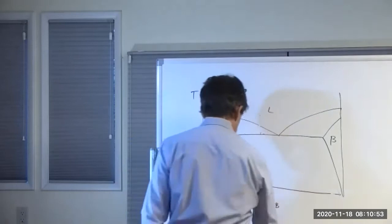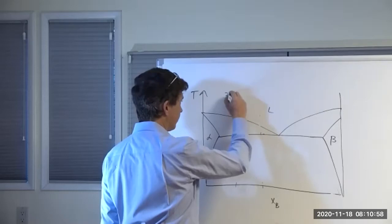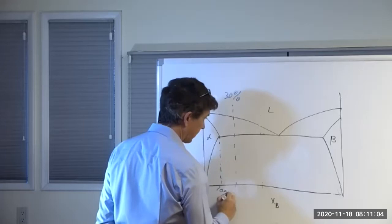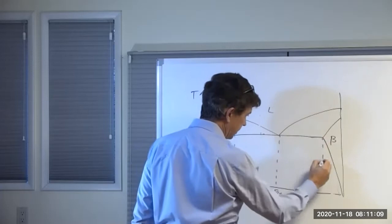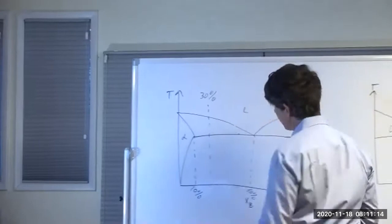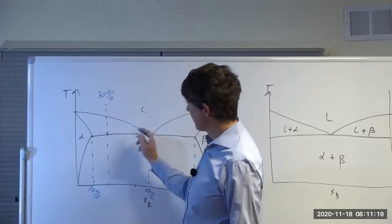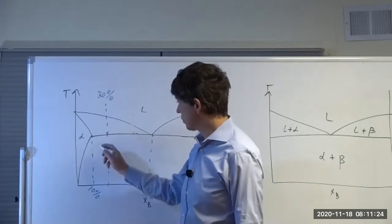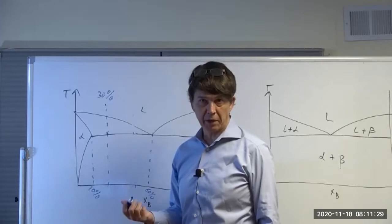Let's say you have 30% of B in some mixture, 20% here, 60% at this point, and 90% here — just to put some numbers on it. If you've cooled to here, you have liquid and alpha in that two-phase region. You can read off the composition of alpha and the composition of liquid, and the lever rule can tell you the fractions.